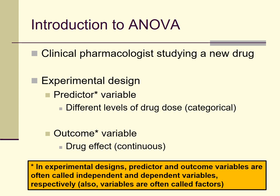Imagine you're an experimental clinical pharmacologist studying a new drug. Your predictor variable is level of drug dosing — placebo dose, low dose, medium dose, high dose — and you have some continuous outcome variable, like a measure of drug effect or side effects. As in unit two, we always have continuous outcome variables. What's different now in unit three is that predictor variables are no longer continuous as in regression — they are now categorical, and are often called independent variables or factors.